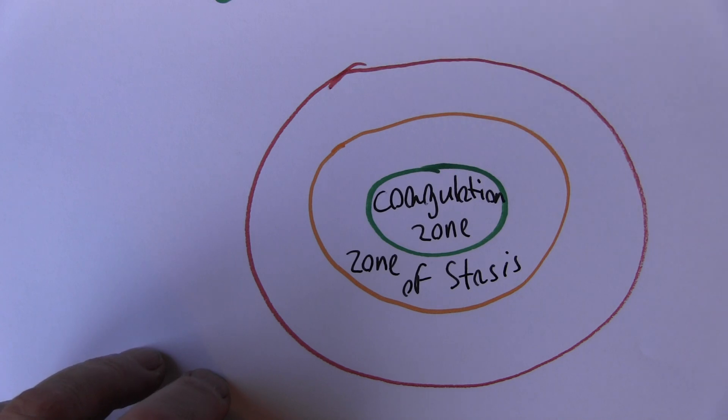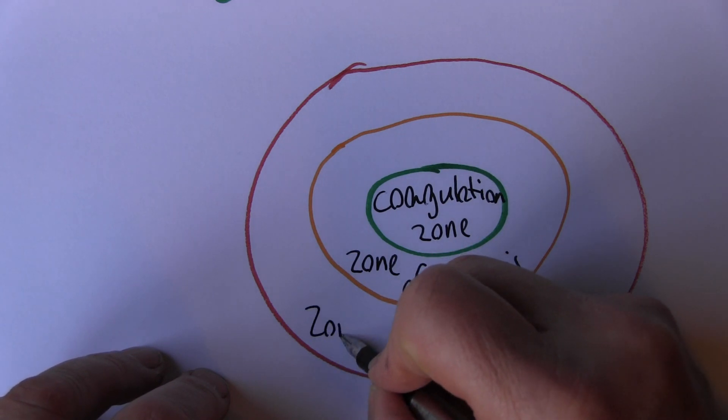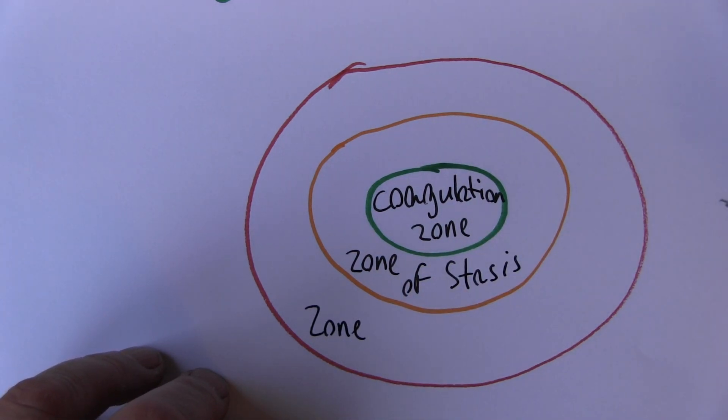Where there's been some insult to the tissues, there's inflammation in this area. So this is the zone of hyperemia. In inflammation of course we get redness, the hyperemia.